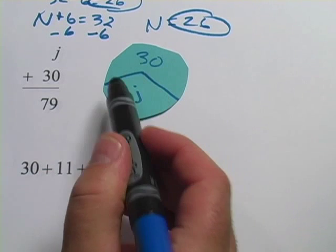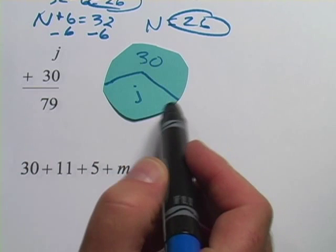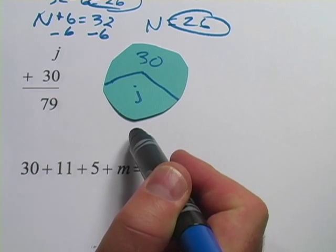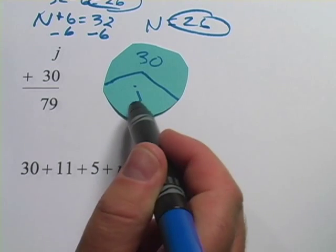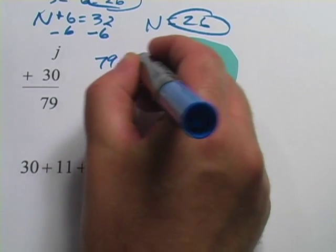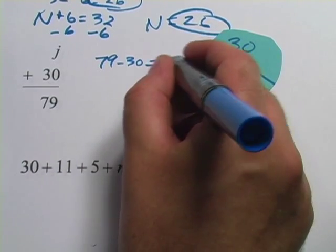So if we were to cut the 30 out and take it away, we'd be taking away 30 from 79. And that would leave us with j. So the idea here is 79 - 30 = j, or in this case, 49.